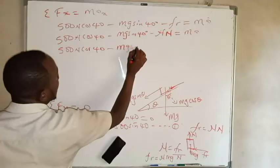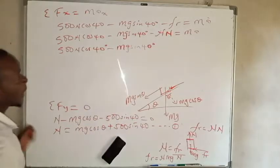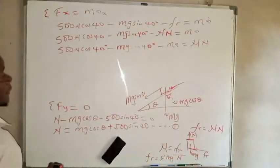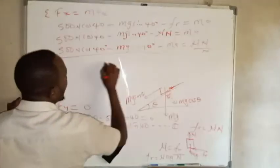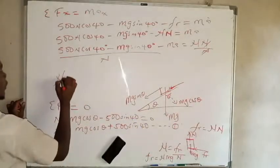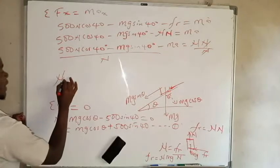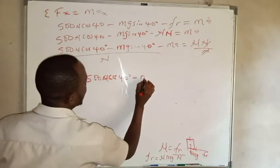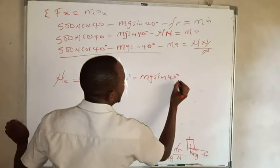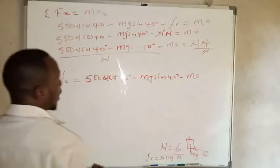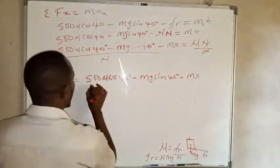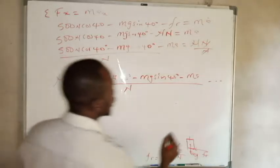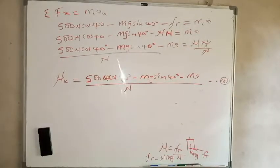Rearranging, we get: 500 cosine 40 degrees minus mg sine 40 degrees minus ma equals mu times N. Dividing both sides by N, and noting this is kinetic friction, we have mu_k equals 500 cosine 40 degrees minus mg sine 40 degrees minus ma, all divided by N. This is equation number two.